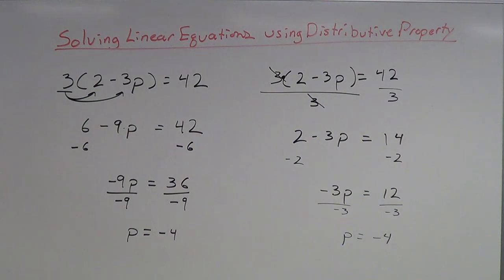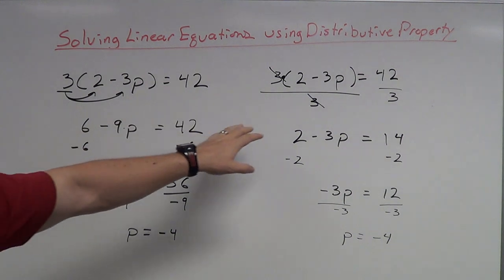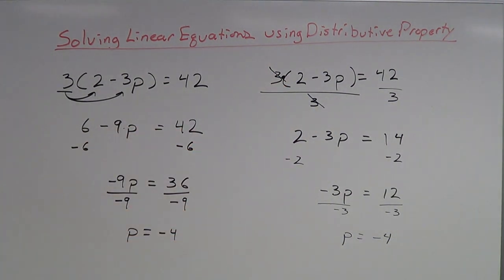Notice the answers we got — both variables, either way of solving it, you're going to get negative 4. That happens in mathematics a lot — there are going to be multiple ways of coming to an answer, you just have to figure out what you like best. Do you like using distributive property, or do you want to get rid of the numbers first and then start solving? Both variations will work, it just depends on what you're more comfortable with. I will do more examples in another video, but that is solving linear equations using the distributive property.